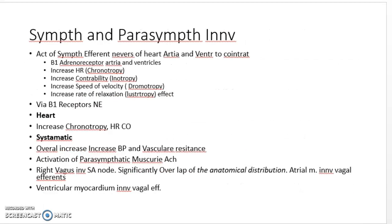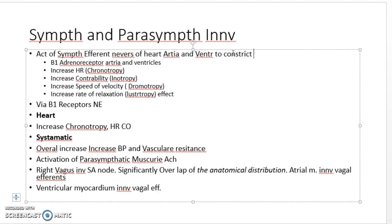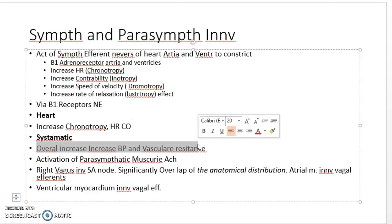To summarize sympathetic and parasympathetic: sympathetic activation of efferent nerve fibers to the heart — to the atria and ventricles via beta-1 adrenergic receptors — causes increased heart rate (chronotropic effect), increasing contractility (inotropic effect), increasing relaxation (lusitropic effect), and increasing conduction velocity (dromotropic effect). Overall, sympathetic activation increases cardiac output, systemic resistance, and arterial blood pressure.